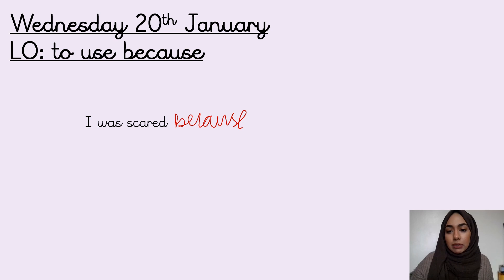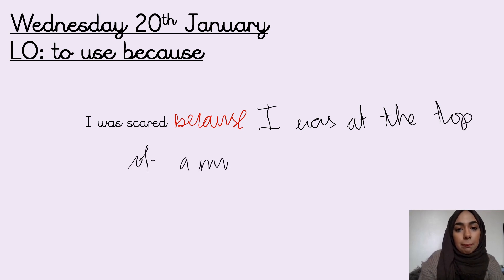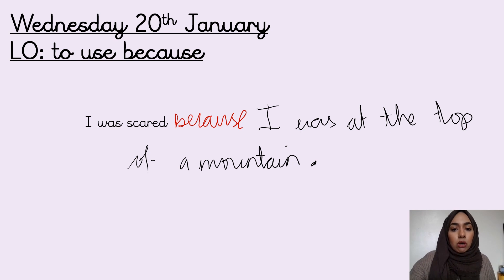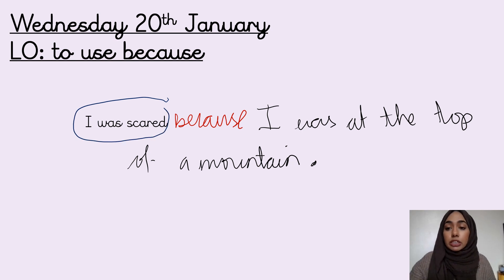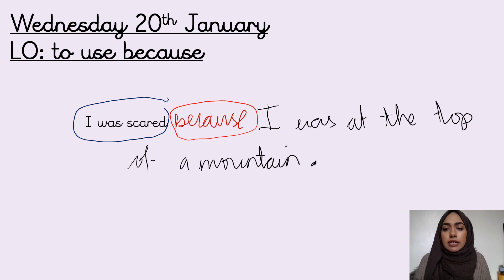Mr. Arnie is very, very scared of heights, so I'm going to say: 'I was scared because I was at the top of a mountain.' We're still writing sentences so it needs to end with a full stop. What is our first complete idea? 'I was scared.' Which conjunction did we use? 'Because' — to give a reason. And the reason given is: 'because I was at the top of a mountain.'